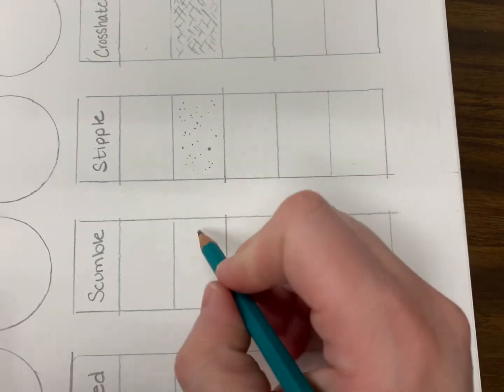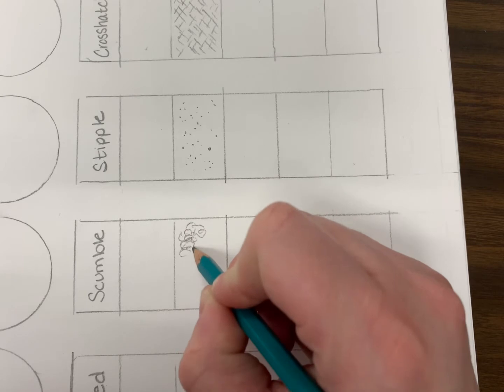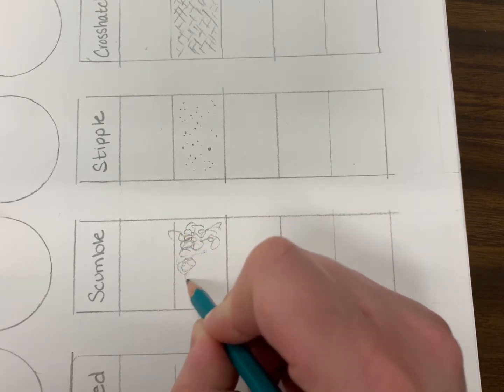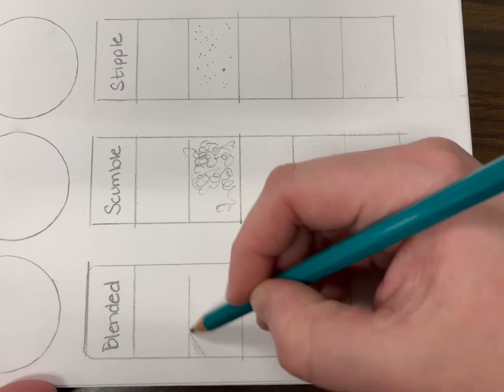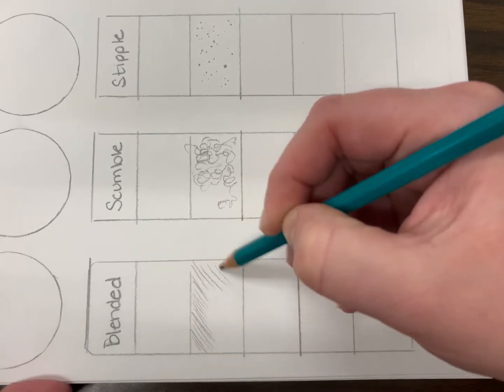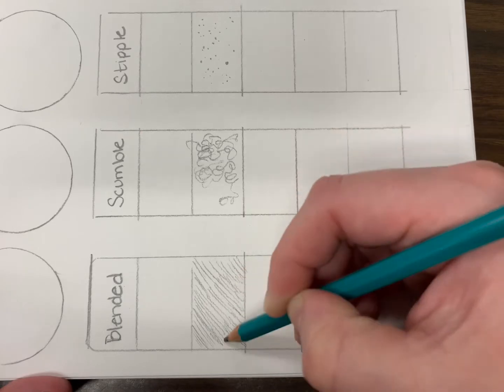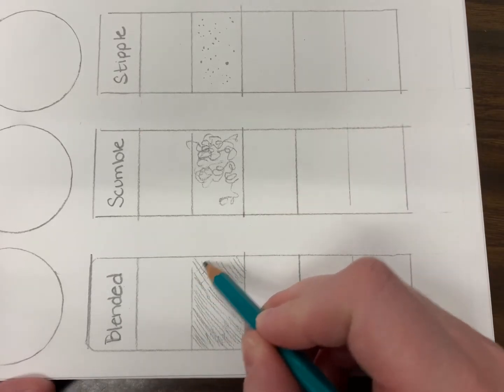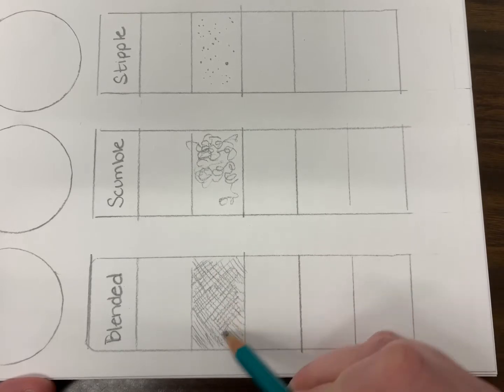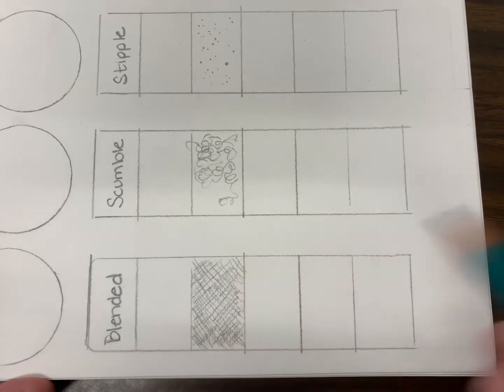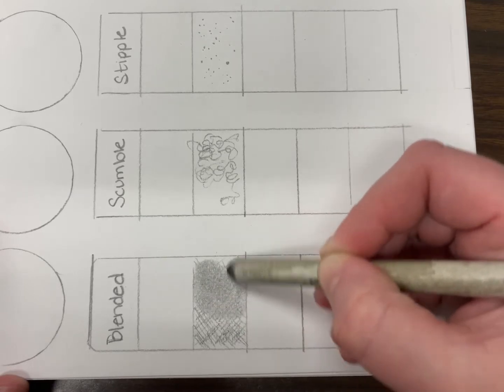But that would be stippling. Scumbling—a scumble, think of it like scribbles. And then blended—this is where you can use a blending, a blender, to sort of—instead of seeing the physical marks, the lines that you're making, they become blended out. So sometimes to help them evenly blend, you can—I use the crosshatching a lot more, and then I take my blender and try and mix them all together so I'm not seeing the mark anymore.